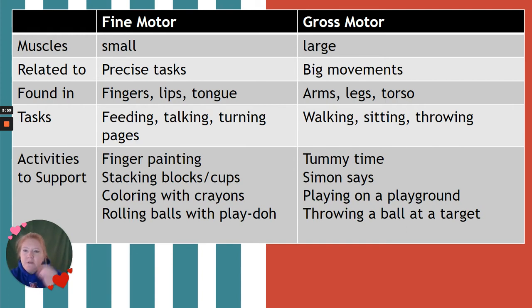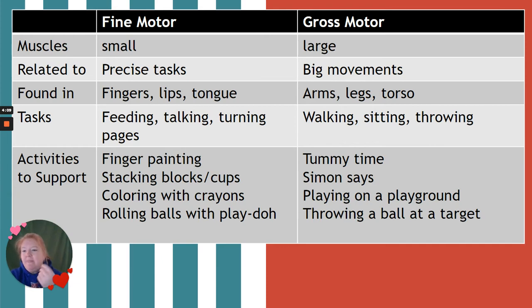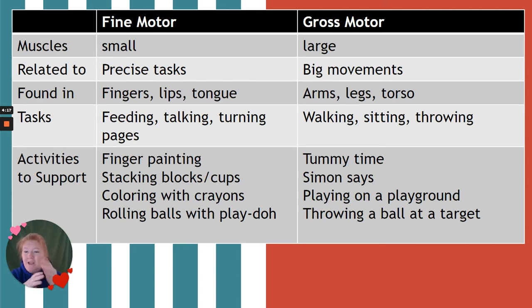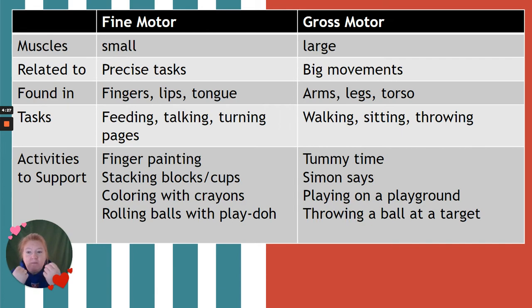Fine motor skills are related to precise tasks — they involve things like your fingers, lips, and tongue. They're important for things like feeding, talking, turning pages. Activities that support this include finger painting, stacking blocks and cups, coloring with crayons and markers, cutting, rolling balls with Play-Doh — all kinds of things to get those hands working. Feeding yourself is also important to help develop those skills.